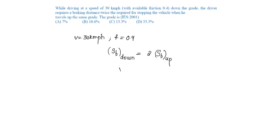While traveling down the gradient, it is v squared by 2g times f minus n, where n is the gradient. For traveling upwards, it is v squared by 2g times f plus n. V squared and 2g cancel.